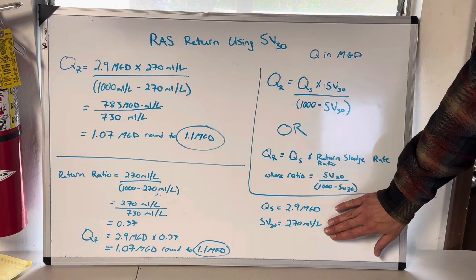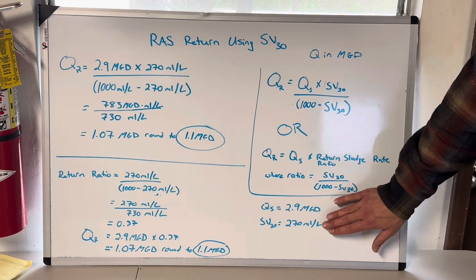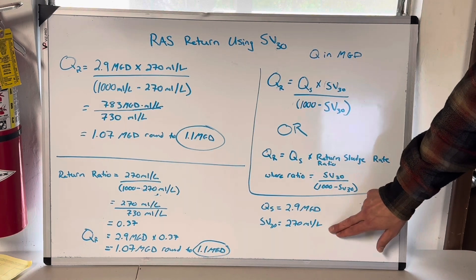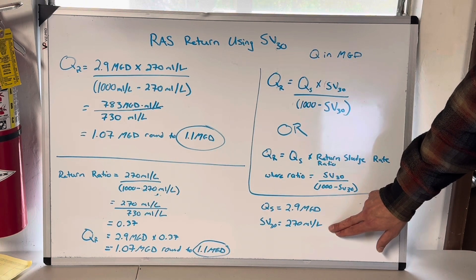So the numbers we were given was my influent flow was 2.9 MGD, my secondary influent flow, 2.9 MGD, and my SV30 was 270 milliliters per liter. Let's work it out.